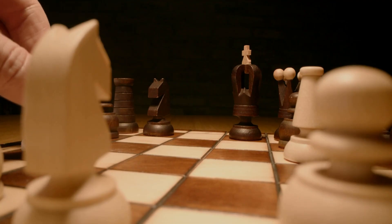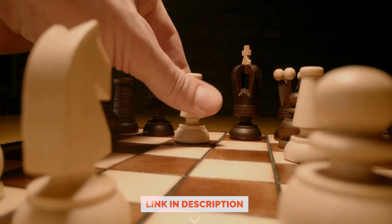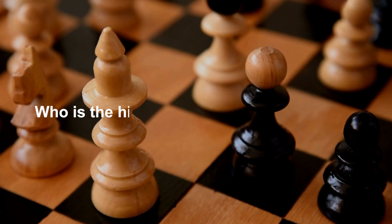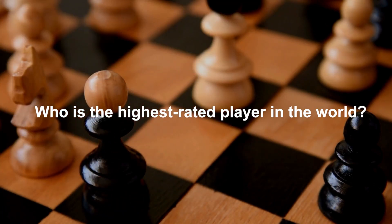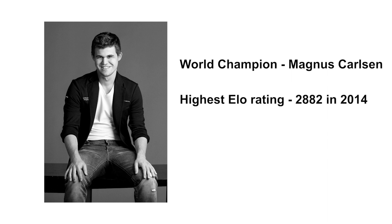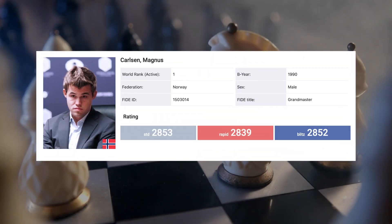If you are interested to understand this in detail, then kindly refer to the link provided in the description box. The highest rated player in the world is the current world champion Magnus Carlsen. He holds the record for the highest ELO rating at 2882 in 2014, with a current rating of 2853, making him the player with the highest ELO rating.